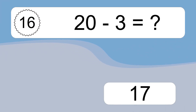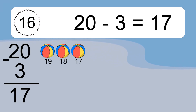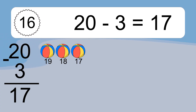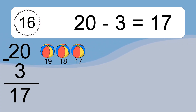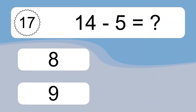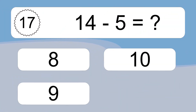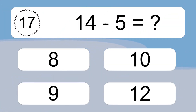20 minus 3 equals 17. Let's count it: 19, 18, 17.